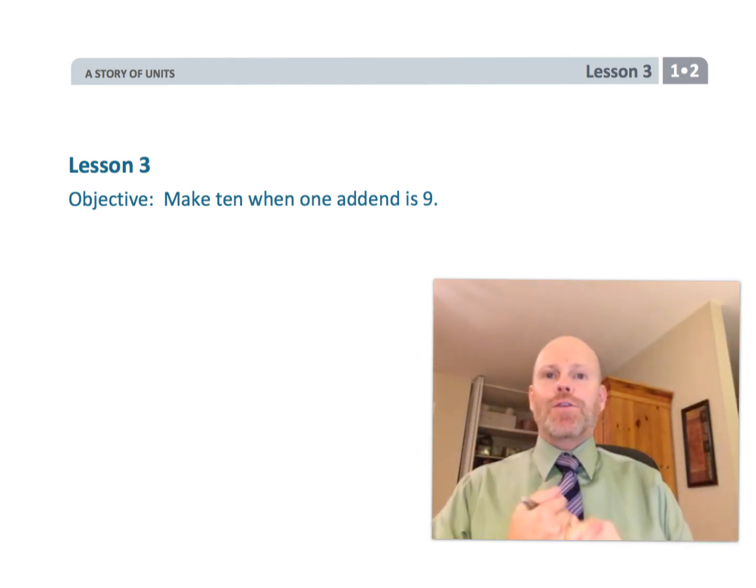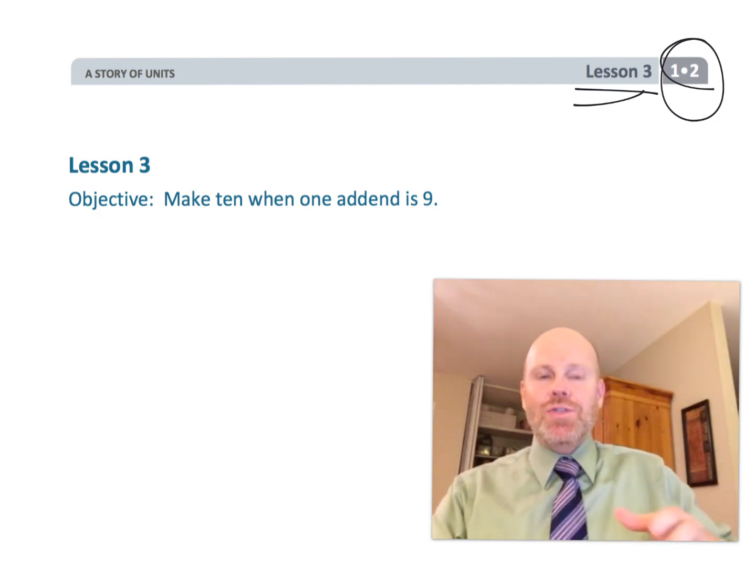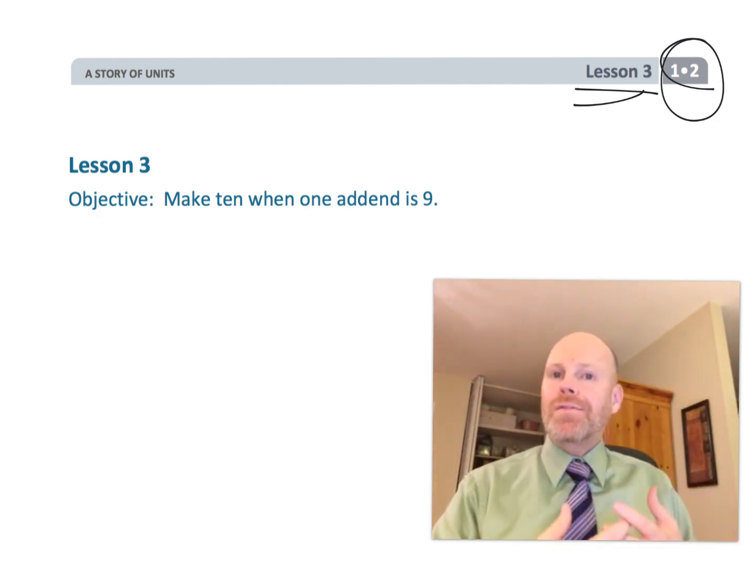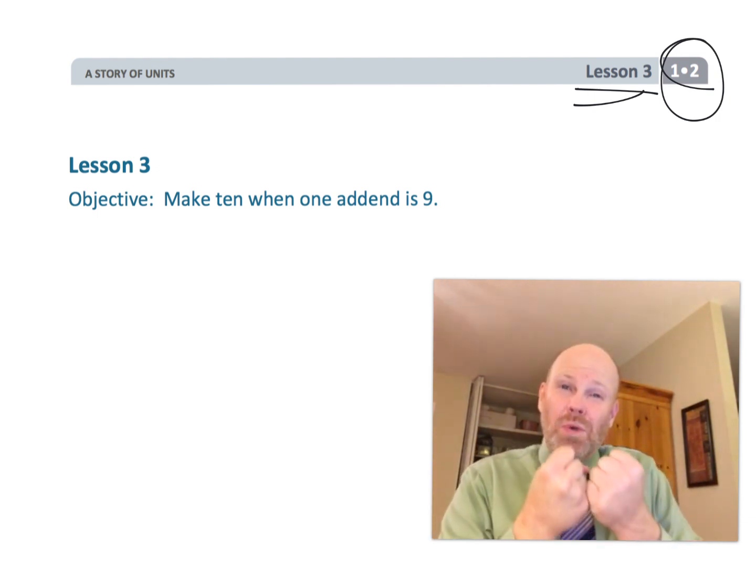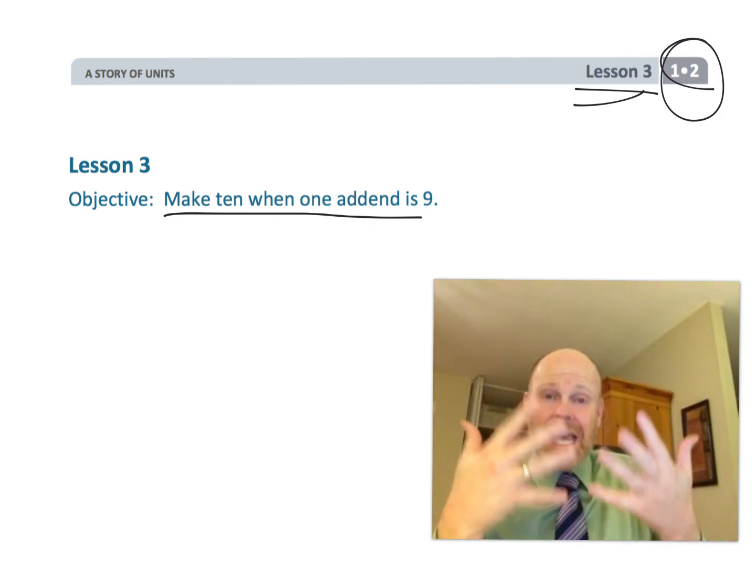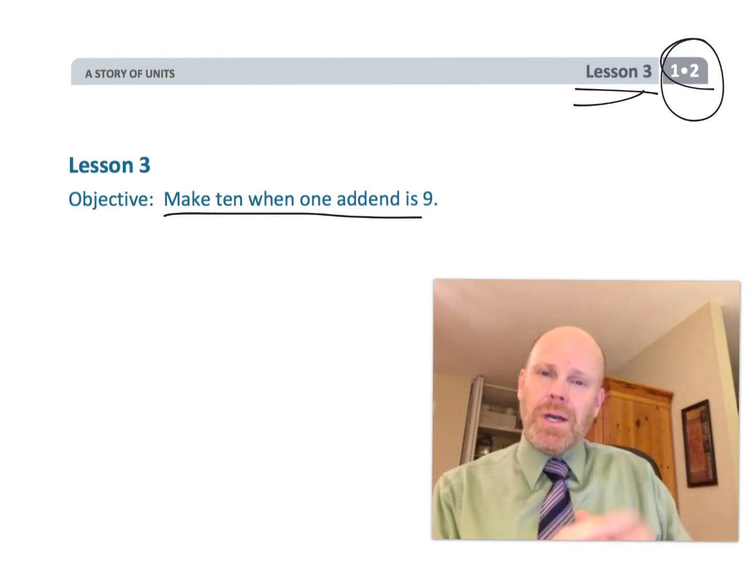This is first grade module 2 lesson 3. In this lesson, students are going to be making 10 when one of the addends is 9. The idea is 10 is a really important benchmark number because we have 10 fingers and because we're in the base 10 system. 10 is a really good benchmark number, so we're always going to be looking for number pairs that make 10.